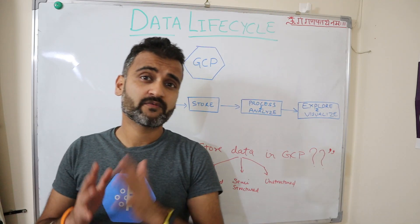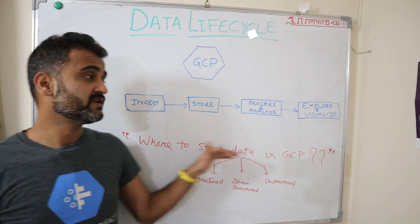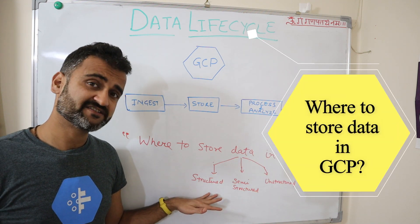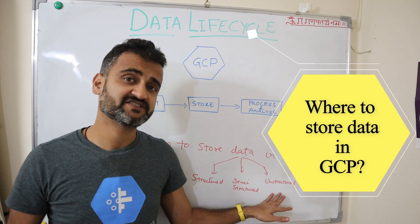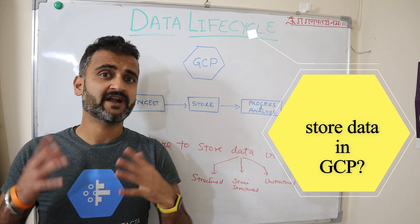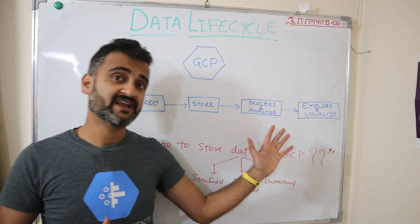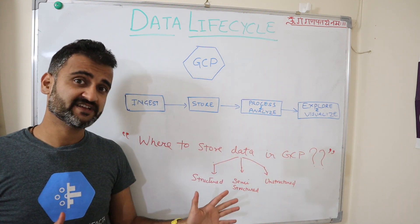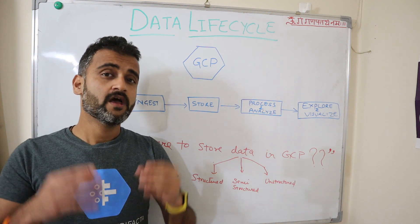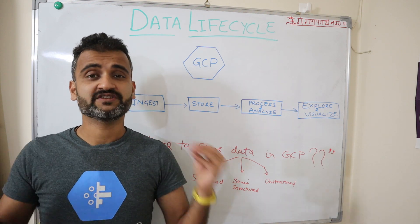We will also answer one important question: where to store data in GCP based on the format — whether it is structured, semi-structured, or unstructured data. By the end of this video, we will understand some popular GCP products for this whole data lifecycle, where every product fits in, and a decision matrix to decide where to store your data on GCP.